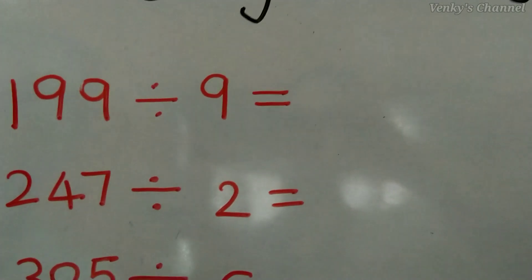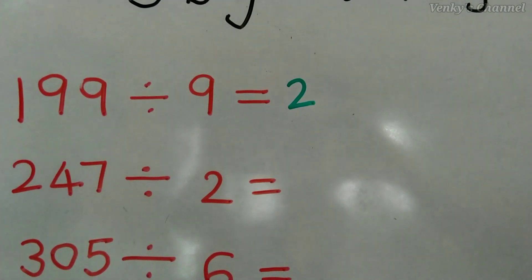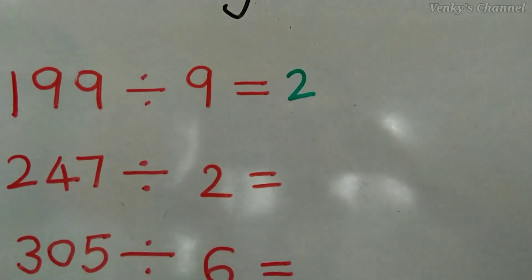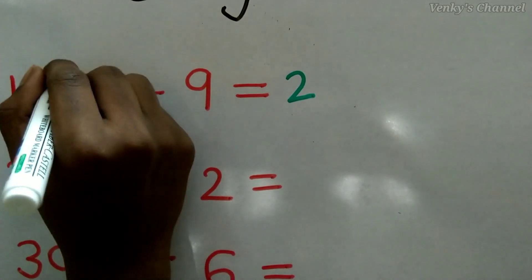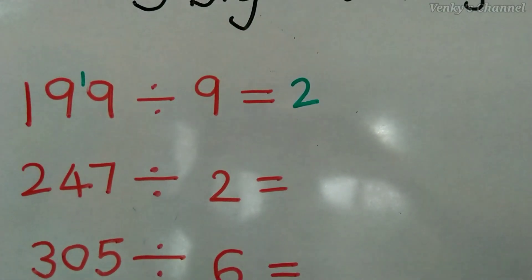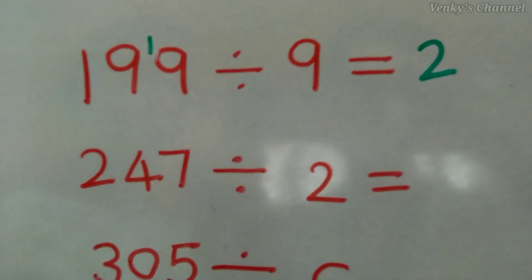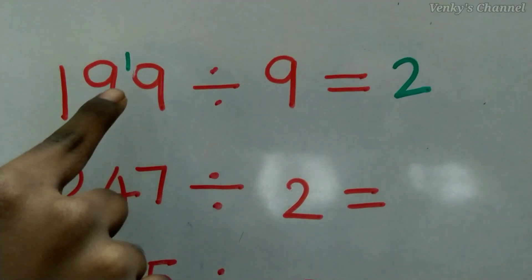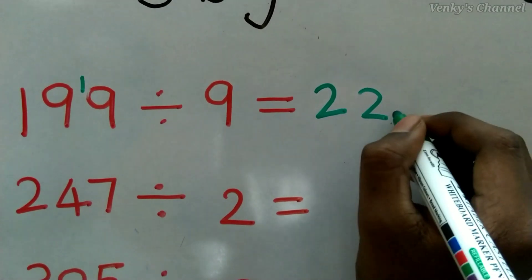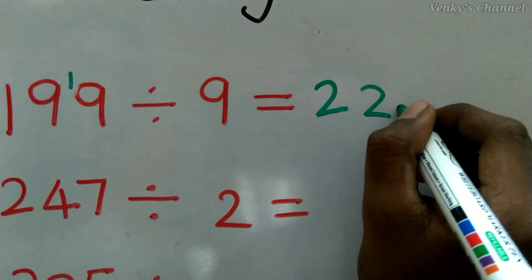9 into what is closest to 19? 9 × 2 = 18, which is closest to 19 and less than 19. We get a remainder of 1, so we write the remainder beside the third digit. Reading them together it becomes 19 again, so 9 × 2 = 18 again, and we have a remainder of 1. We have to keep a decimal point.